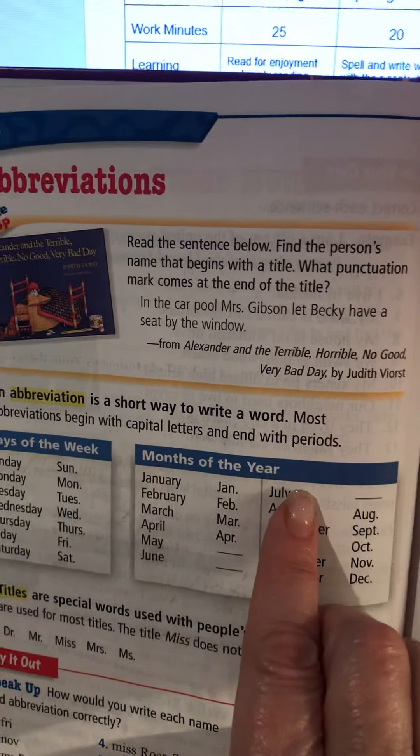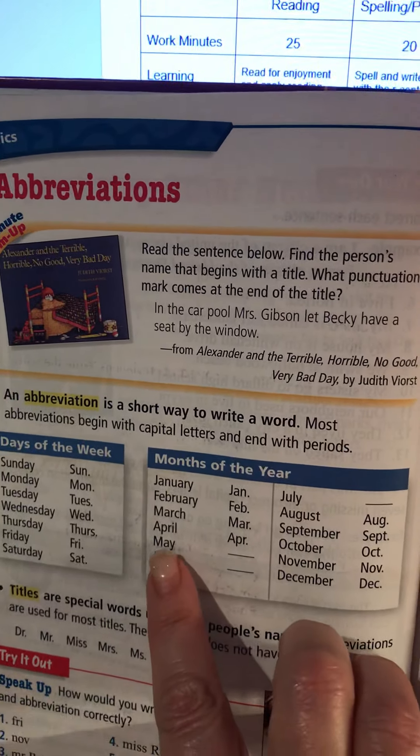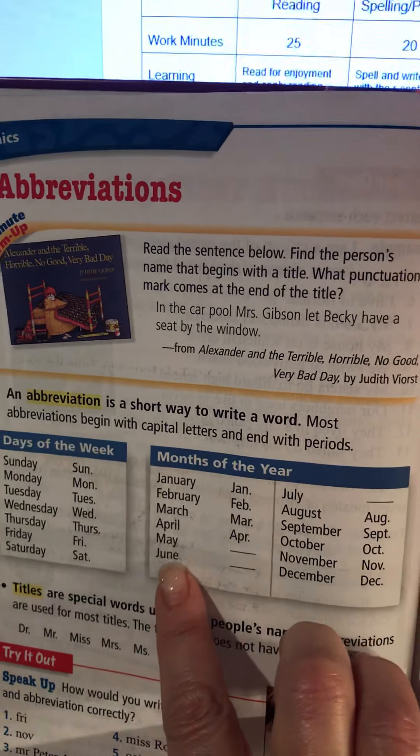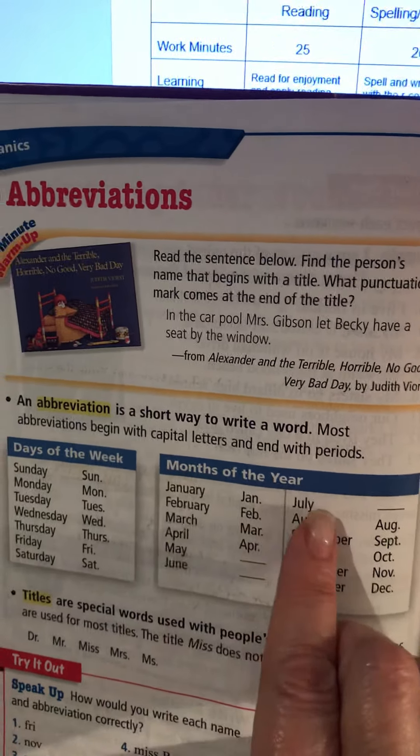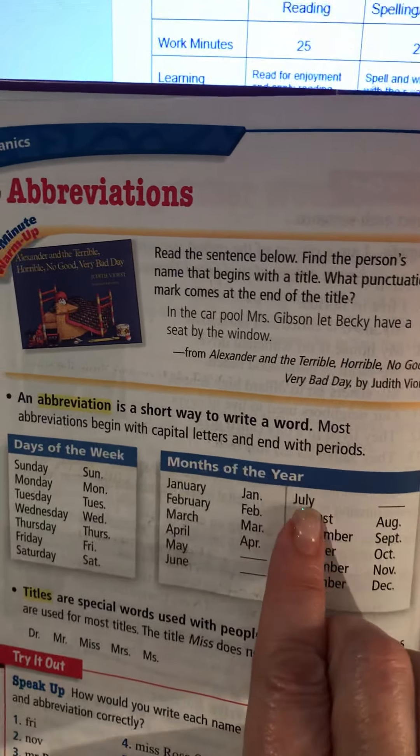The same goes for the months of the year — the same rules about adding periods and capital letters. But May, June, and July do not have an abbreviation because they're already short months. There are only three or four letters in them, and therefore they have no need to be shortened. The remaining months are abbreviated, so please learn and memorize these.